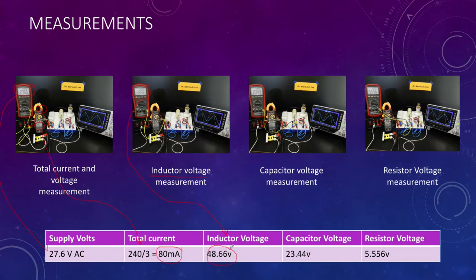Then the voltage across the capacitor - you can see here the voltage is being measured across the capacitor and we're getting about 23.44. That's where that value is coming from. Finally, our voltage drop across our resistor is at 5.556 volts. We've put that into our table. So there's our four voltages.